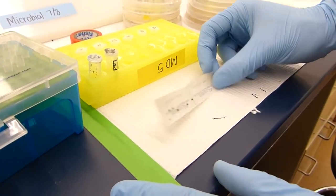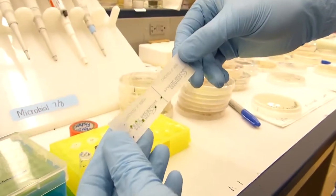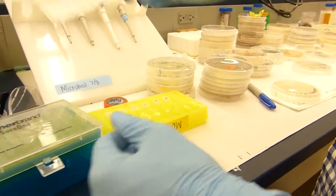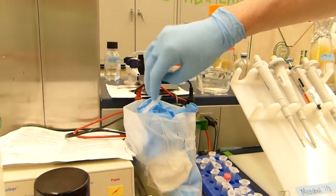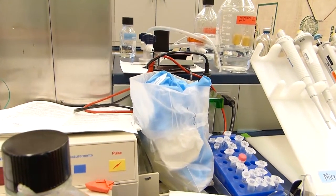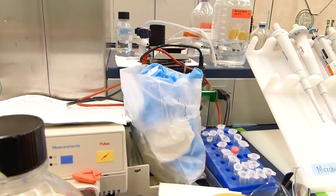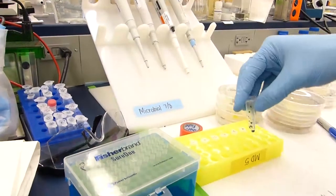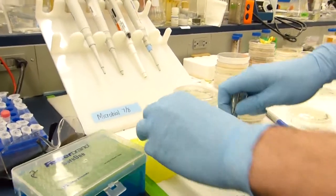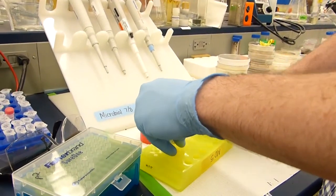During this time you can clean up your workstation including putting anything that has been in contact with the ethidium bromide liquid into a trash receptacle that you know is meant for items that have come in contact with ethidium bromide. You also will want to put your DNA ladder and loading dye back in the freezer as well as your samples. Your samples will last longer in a freezer box and if you want to use them for further downstream applications.